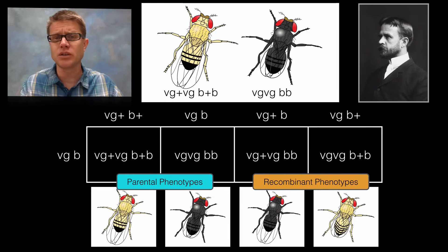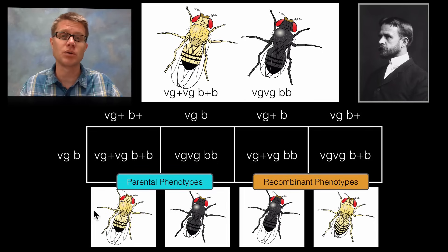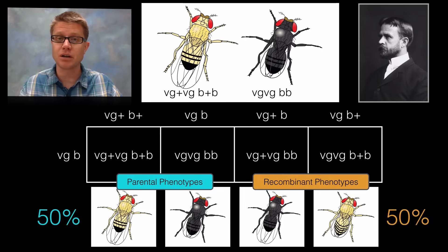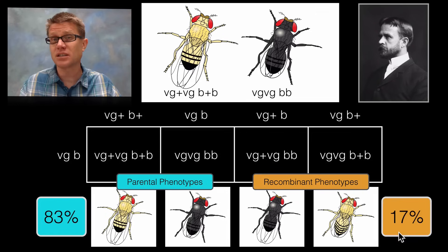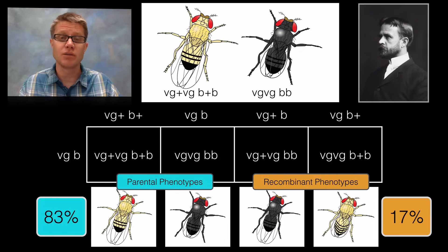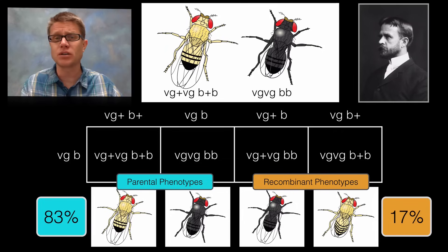But that shouldn't have been confusing to him. If we look at the Punnett square we have four different squares, and so we would expect that 50 percent are going to be parental and 50 percent are going to be recombinants. But when he did this cross what he found is that there were actually 17 percent recombinants and 83 percent that were of the parental type. So was Mendel wrong? Was all of this wrong? No, it's just that the model wasn't good enough.